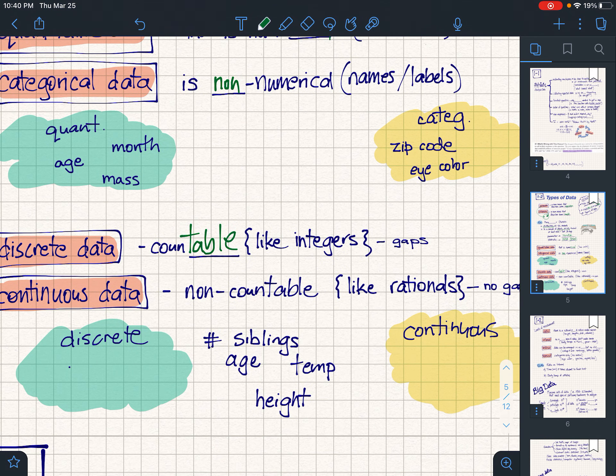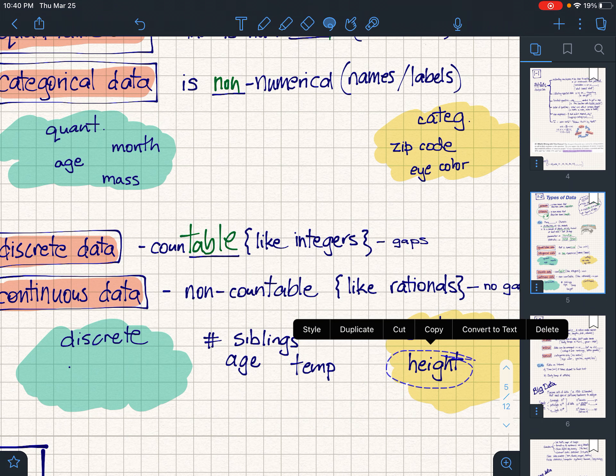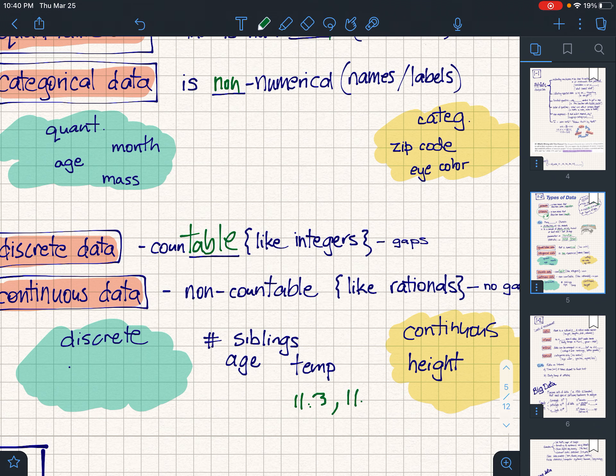Continuous data is non-countable. You cannot count heights. Why can't you count heights? Because you could have like 11.3 and 11.4, and there's a number between them. No matter what two numbers you pick, you can always find a number in between those numbers, no matter how close you make them. So temperatures are not discrete; those temperatures are continuous. Age, most of the time age is continuous—we have months, days, seconds. But if you talk to little kids they'll ask how old are you...